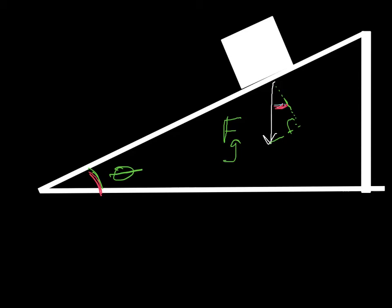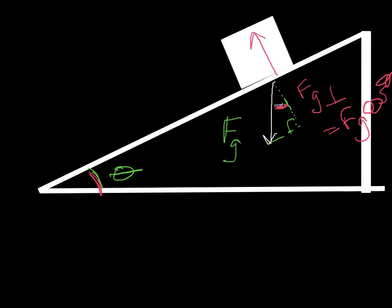Our perpendicular component — we call that the force of gravity perpendicular — this side is adjacent to the angle, so this is equal to the cosine of the angle. We use FG·cos(θ) to get the normal force, and that has to counteract the normal force working perpendicular to the surface. So on an inclined plane, our normal force equals the force of gravity times the cosine of the angle. This is only on an inclined plane — please do not just use this whenever you feel like using FG·cos(θ), it's just not going to work.